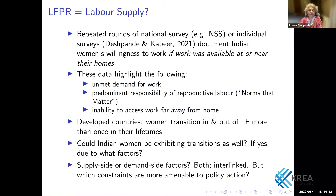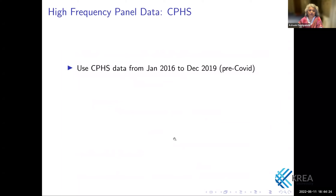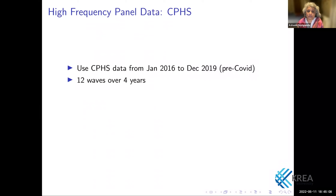There are both supply and demand side factors, and they're interlinked. What we wanted to understand was which of these factors are amenable to policy intervention. We were lucky to have access to data from the Centre for Monitoring Indian Economy (CMIE) — their Consumer Pyramids Household Survey. Every four months, a round of this data is available, so individuals or families get tracked three times a year. We used data from January 2016 to December 2019, pre-COVID, giving us 12 waves over four years.